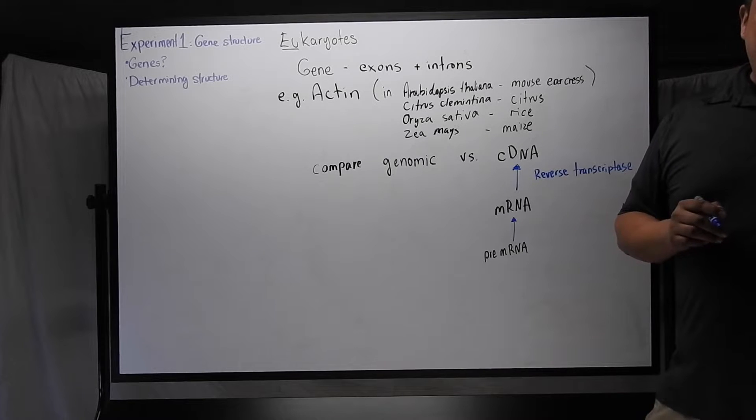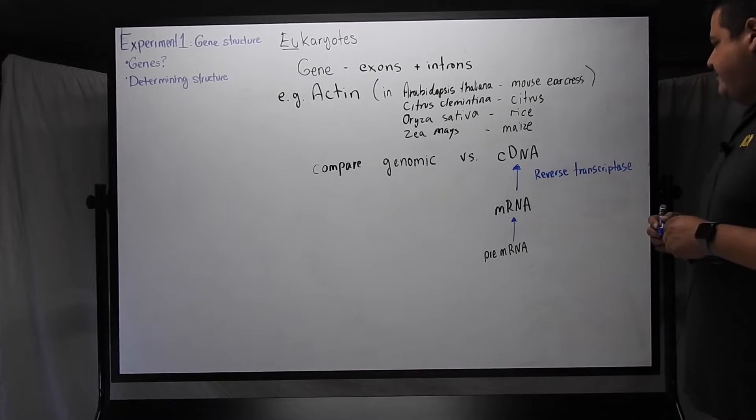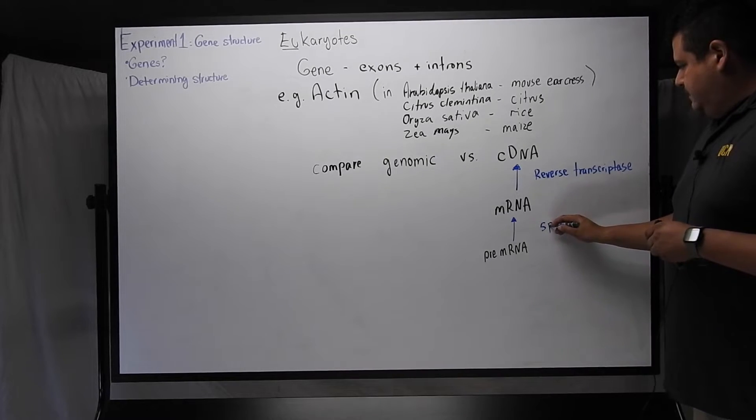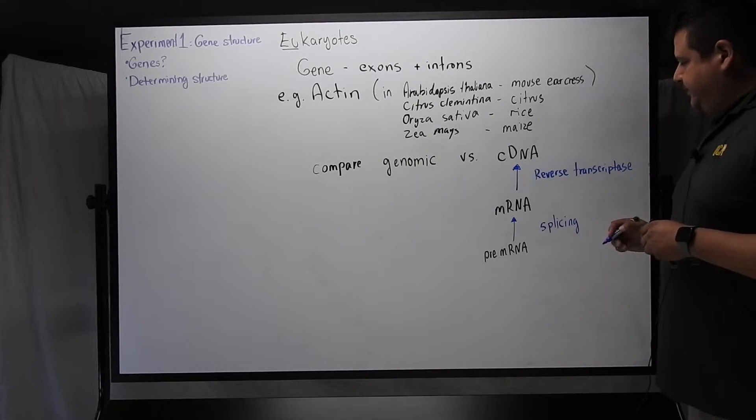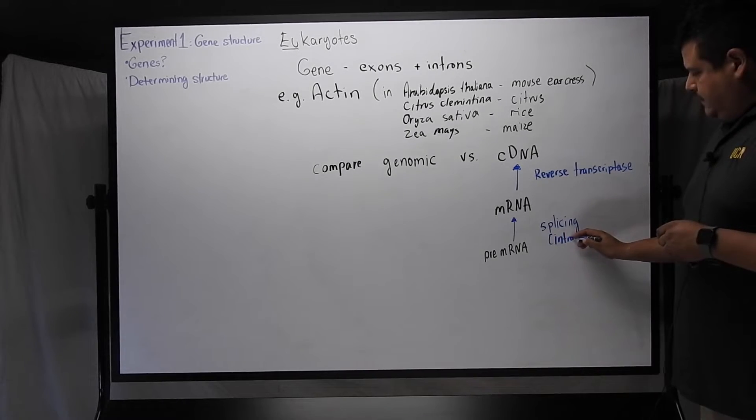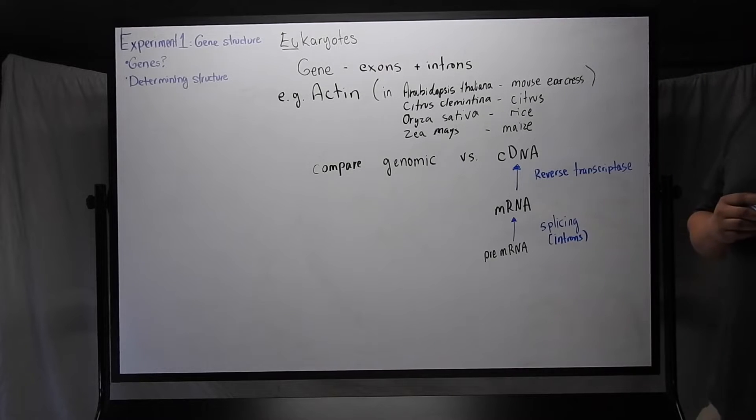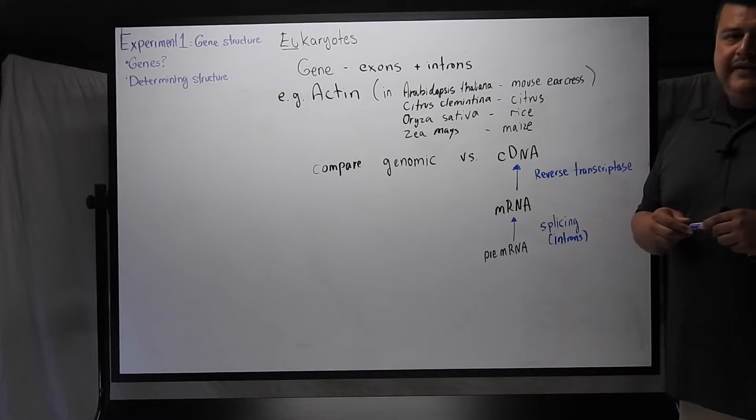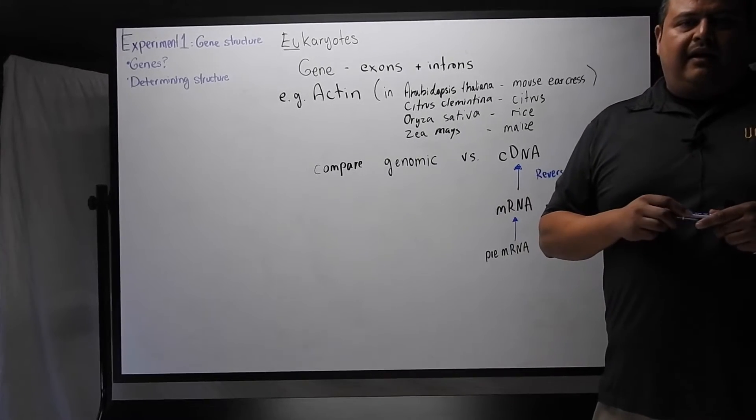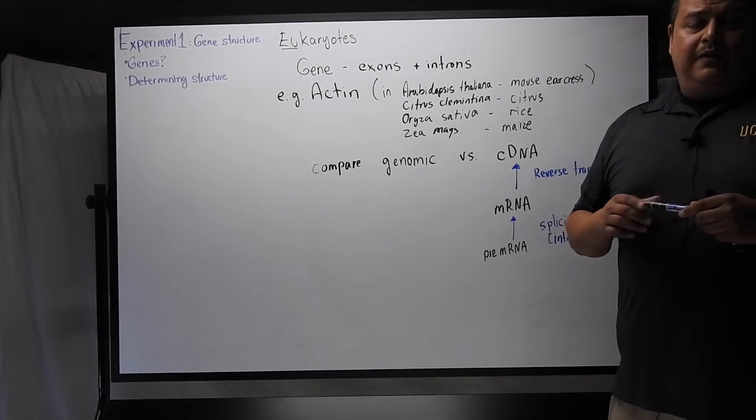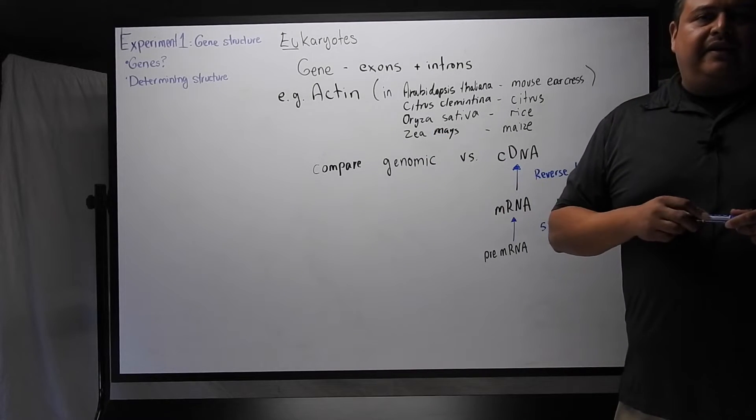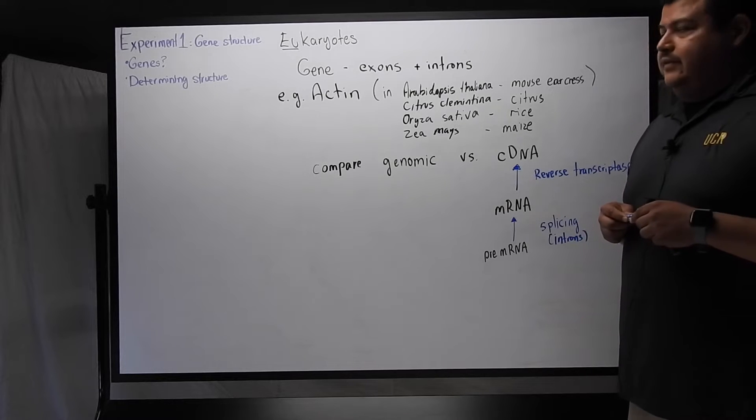So what happens between pre-mRNA and mRNA that's crucial to this experiment is splicing occurs. So during splicing, the introns are removed. So now you have a transcript of mRNA, this single-stranded RNA molecule that will then be translated into protein.